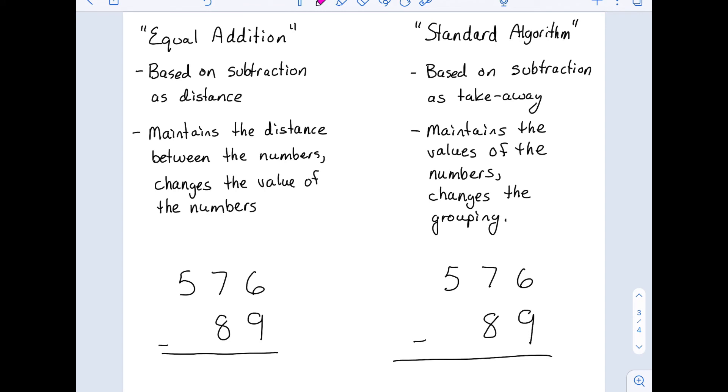Let's compare this equal addition algorithm to the standard algorithm that most of us probably learned. Our equal addition algorithm is based on thinking about subtraction as distance between two numbers, whereas our standard algorithm is based on thinking of subtraction as taking away. Equal addition maintains that distance between the numbers and just shifts both numbers. So it changes the values of the numbers. In the end, we're actually subtracting two different numbers, not our original ones. But by shifting them in the same way, we maintain the distance. The standard algorithm maintains the value of the numbers, but we change our grouping.